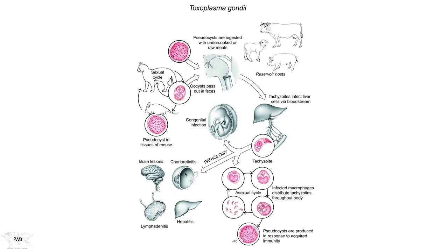In an adult-acquired human infection, pathologies can occur from the attack of various tissues by tachyzoites. There can be retinal damage, lesions in the brain, enlargement of lymph nodes from attack of the lymphatic system, and a hepatitis-like syndrome from killing off parenchymal liver cells. This organism knows no bounds in terms of cell type it will infect, making it one of the most ubiquitous parasites we can think of.